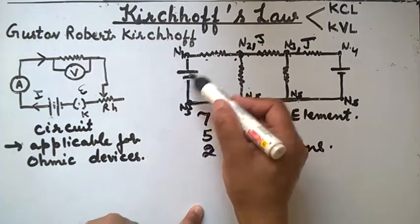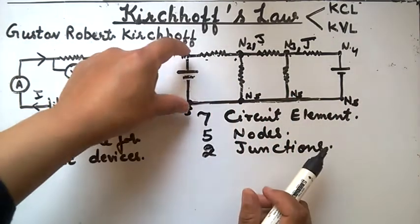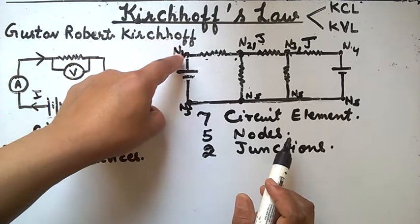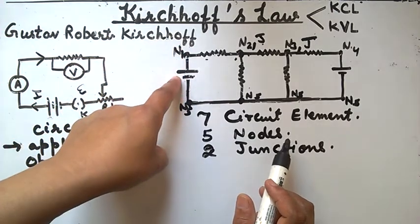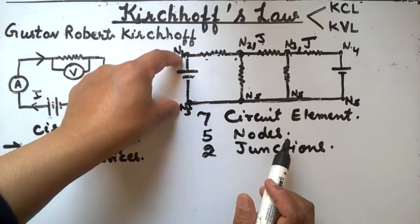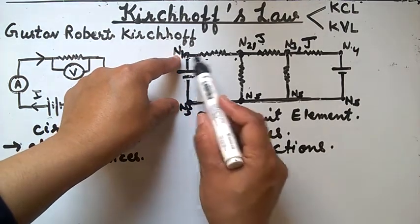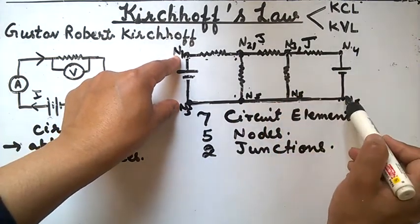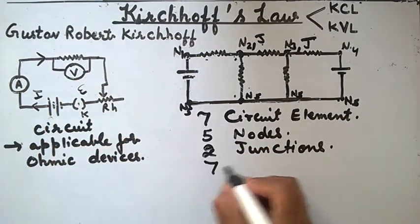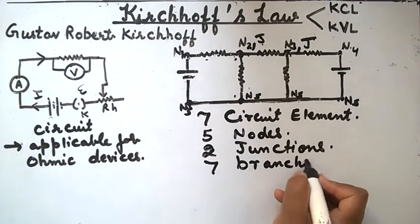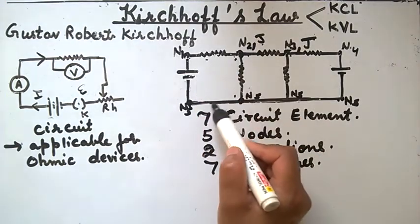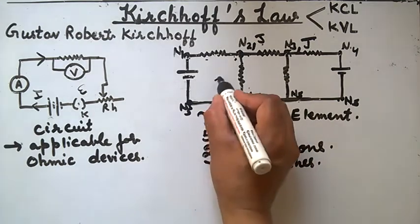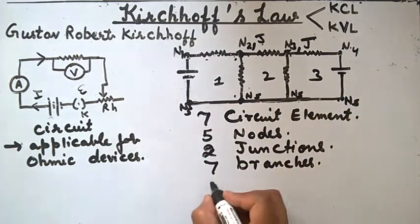How many branches are there in this network? A branch is a path between two nodes in which no third node is connected, i.e., the circuit elements are connected in series. Here we can identify seven branches. A mesh is a closed loop in which no other loop is included. Here there are three closed loops known as meshes.